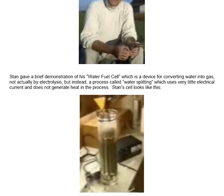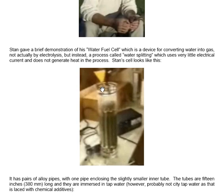Stan's cell looks like this. It is a transparent plastic container with metal pipes inside it. It has pairs of alloy pipes, with one pipe enclosing the slightly smaller inner tube. The tubes are 15 inches, which is 380 millimeters long, and they are immersed in tap water.